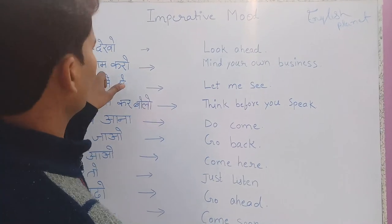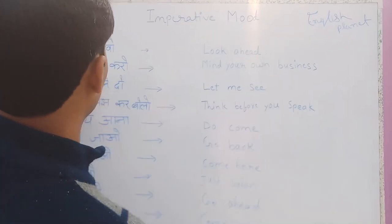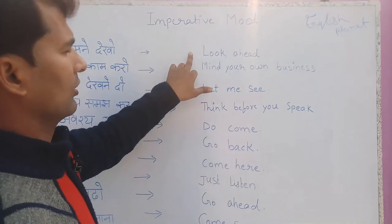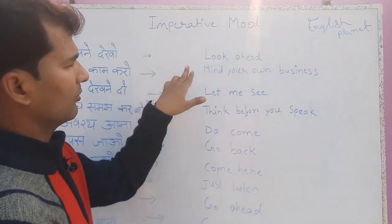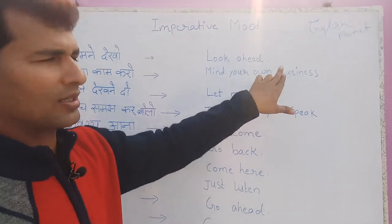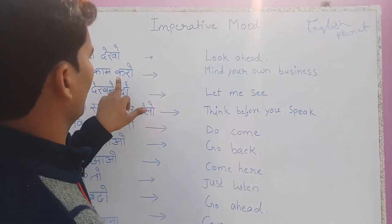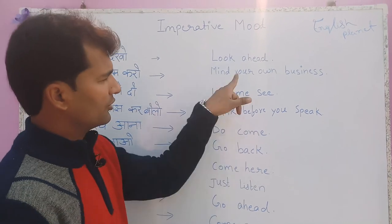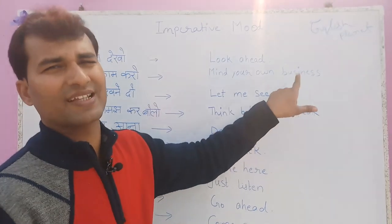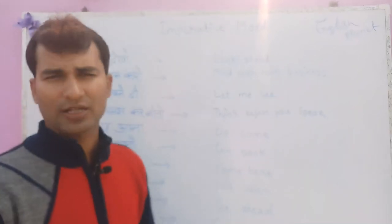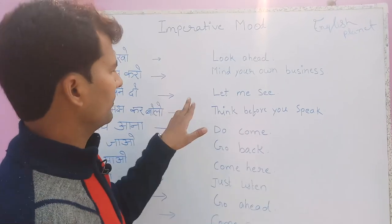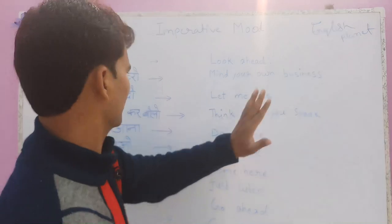Let's start. First: 'Look ahead.' If someone wants to say look ahead, you say 'Look ahead.' Next: 'Do your own business' — 'Mind your own business.' If someone is disturbing you or struggling around you, you can say 'Mind your business.'